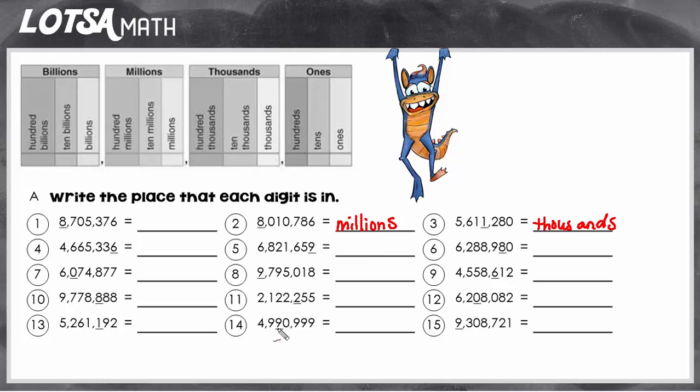Okay, so let's look at number 14. This 9 is in this column, which is the 5th column. The 5th column is the ten thousands place. So here you would write the ten thousands place.